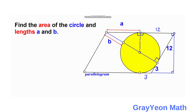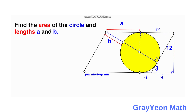Next, we project a line from the center of the circle to the point of tangency below, and this is also a right angle. Notice that this whole length is 12, and since one segment is 3, this part of the distance is 12 minus 3, which gives us 9.